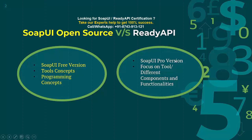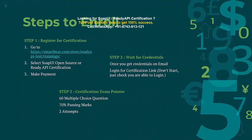In the case of ReadyAPI, which is the pro version of SOAP UI, we need to focus on the tool, its components, its functionalities, and how to implement logical scenarios. The major difference between the two certifications is programming concepts — in the free version they will ask some programming concepts, but in the pro version it will be completely focused on ReadyAPI's functionalities and its implementation with some real-time scenarios.